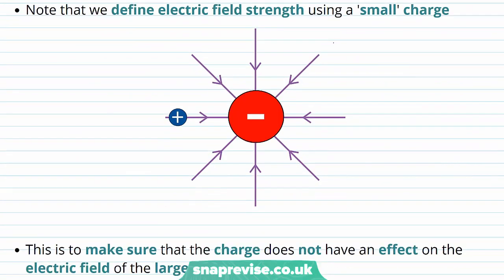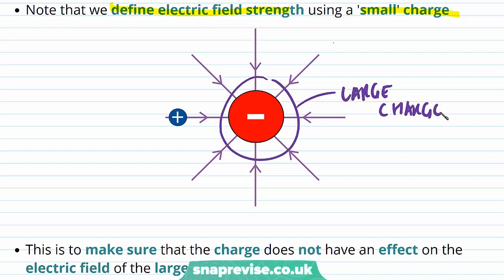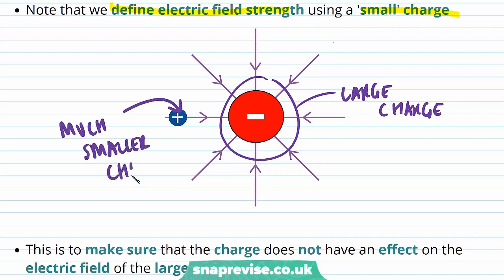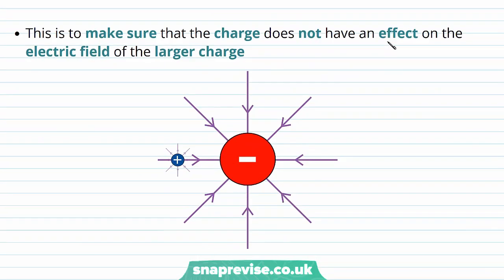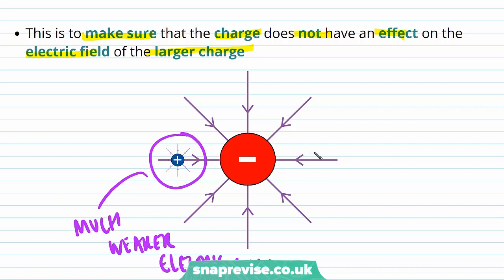An important thing to note is that when we define electric field strength, we use a small charge. So when we're defining the electric field strength around a large negative charge, we have to be careful to use a much smaller charge in order to define the strength of the electric field. The reason for this is to make sure that the charge does not have an effect on the electric field. Because the test charge is so small, its own field will be much weaker, and therefore we can ignore its effect on the larger electric field.